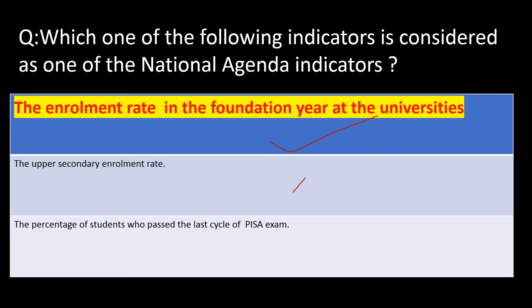If you have already memorized it, you know that the top priority of the national agenda is that they want the enrollment rate to be very high — 100% — in the foundation year at the universities, because they want people to be educated and acquire education. That's your right answer. The other two are distractors, and for PISA exam they usually ask for scores, not questions like this.